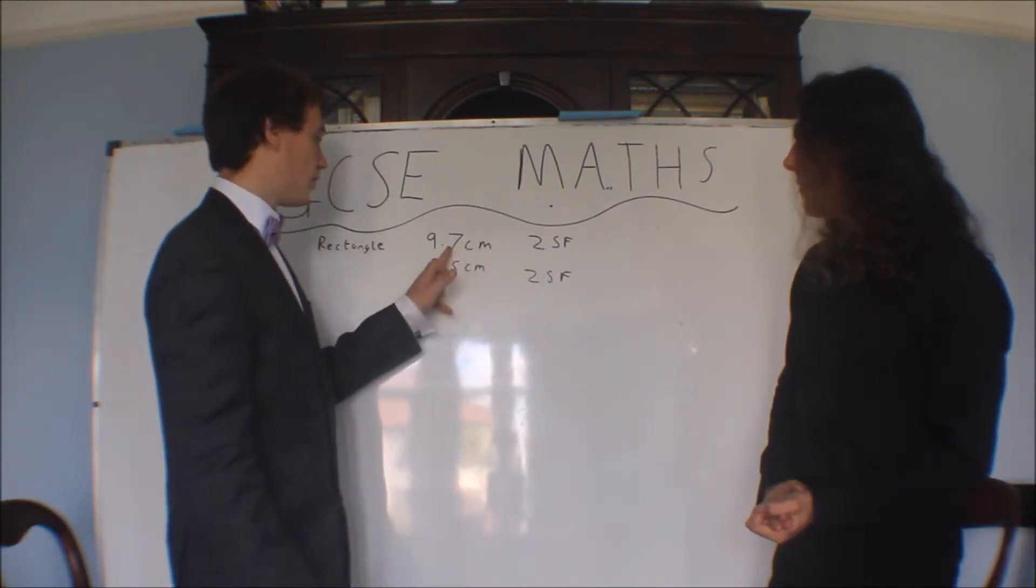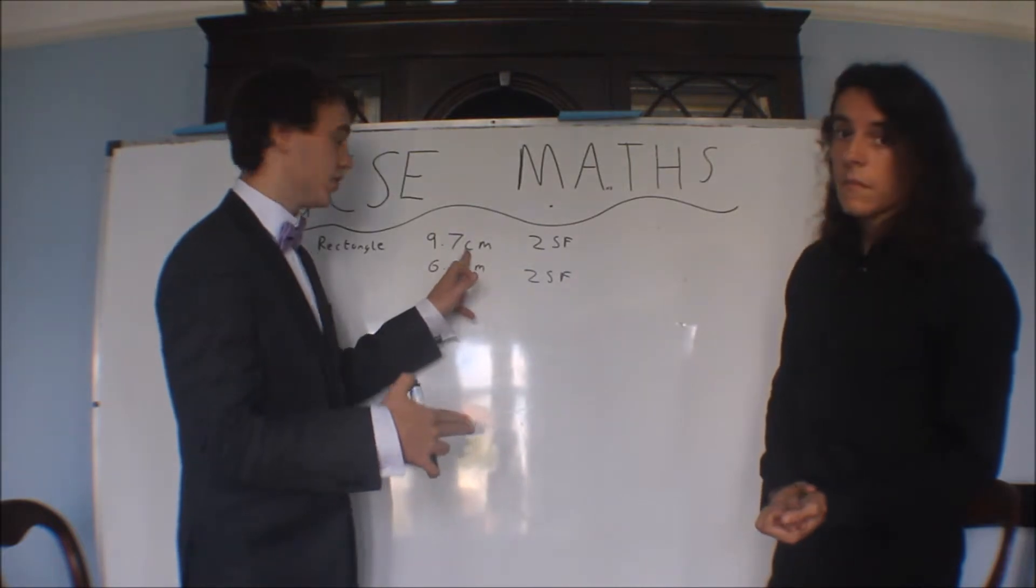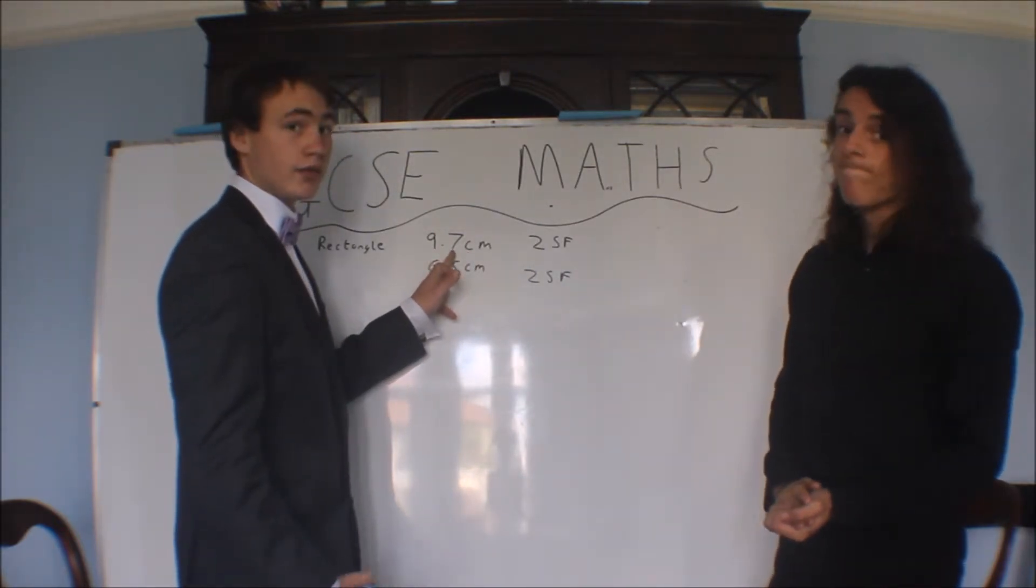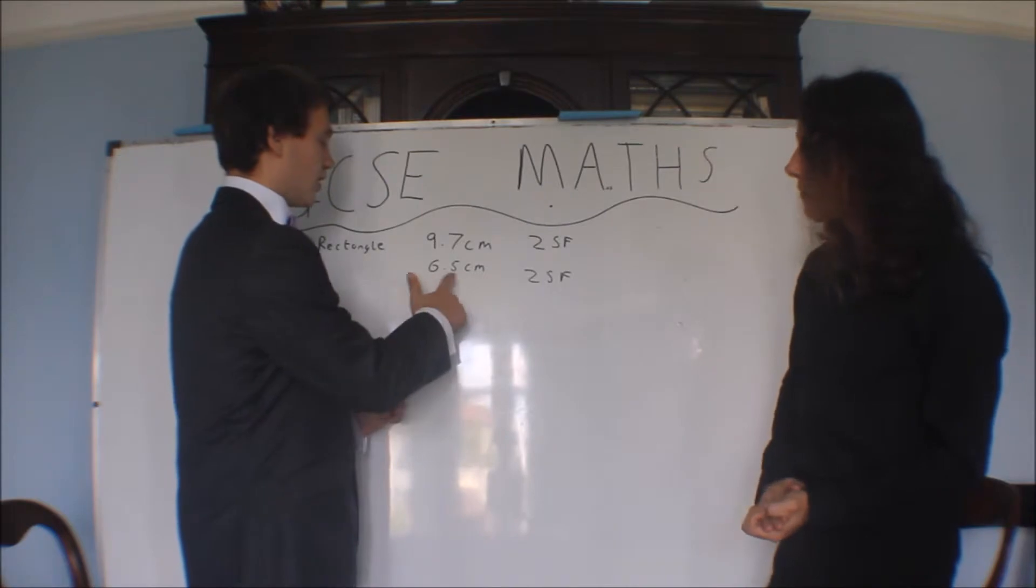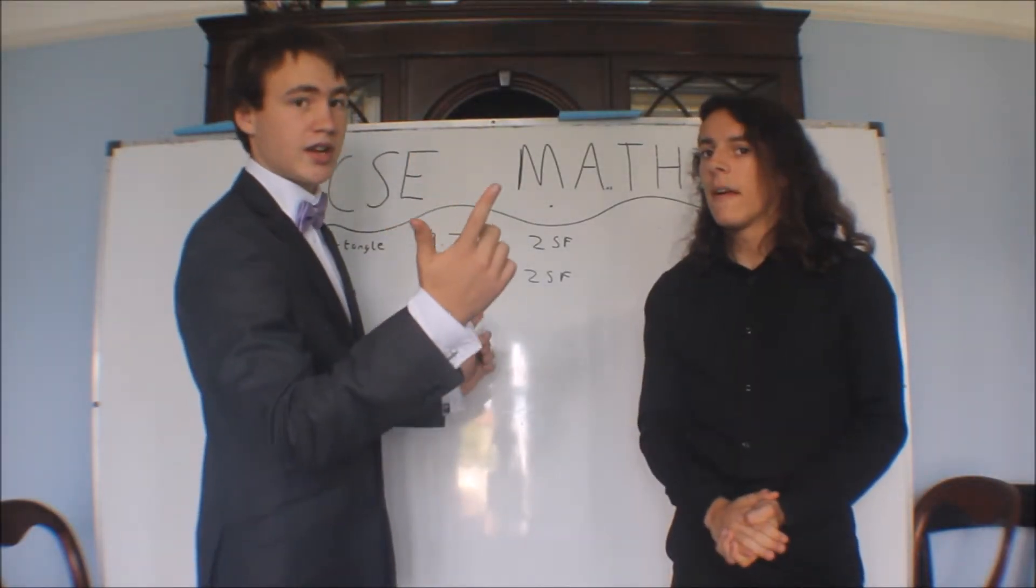Well, it's to two significant figures, so this could have been 9.75 and been rounded down to 9.7. Or it could have been 9.65 and rounded up to 9.7. And the same with this, so you add 0.05 in this case, either side.